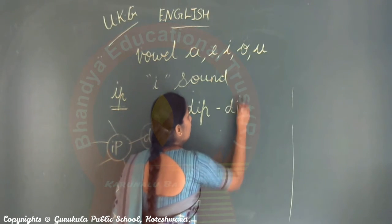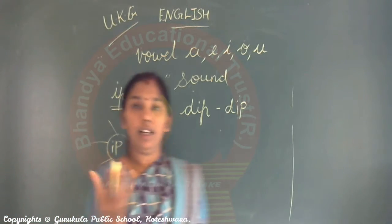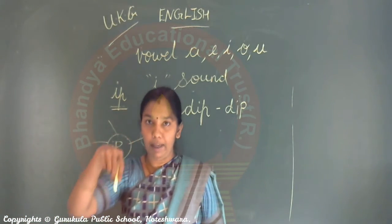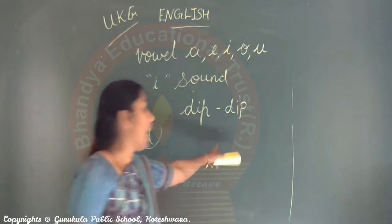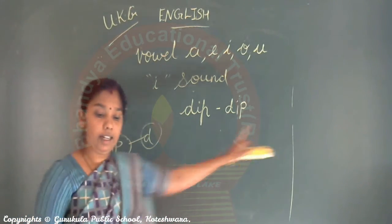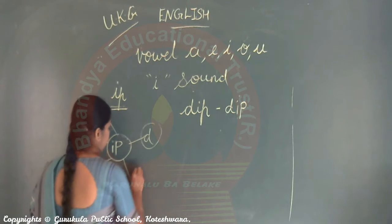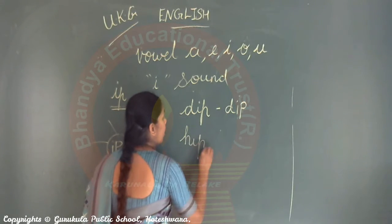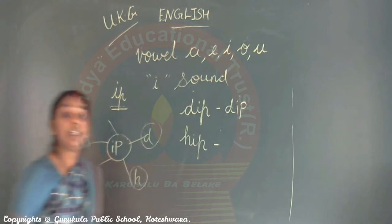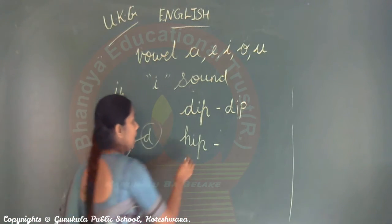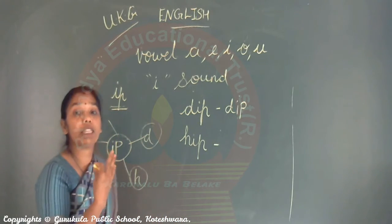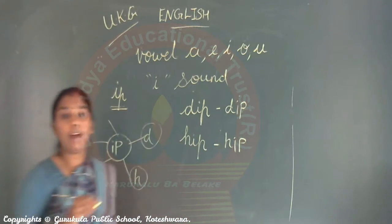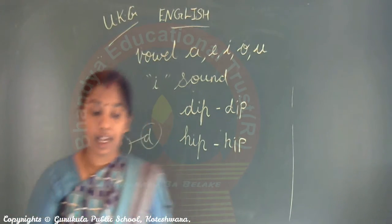I-P sound words. D-I-P - how do you pronounce it? Dip. Next, H-I-P - how do you pronounce it? Hip. H-I-P - Hip.